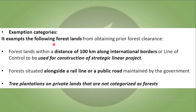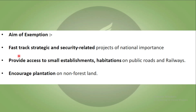Exemptions: kuch categories mein prior forest clearance se exempt kiya gaya hai. These are: forest lands within a distance of 100 km along the international borders or the LOC, to be used for construction of strategic linear projects; forests near rail lines or public roads which are maintained by the government; and tree plantations on private lands not categorized as forest. The aim is that fast-track and strategic security-related projects of national importance will be built faster. It also provides access to small establishments, habitations, public roads or railways. Moreover, it will encourage plantations on non-forest land.